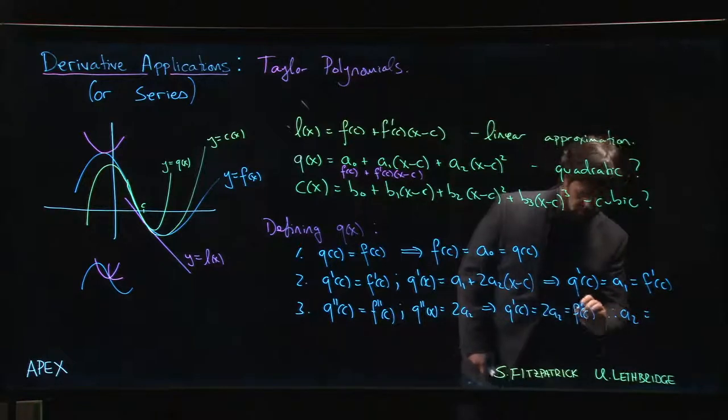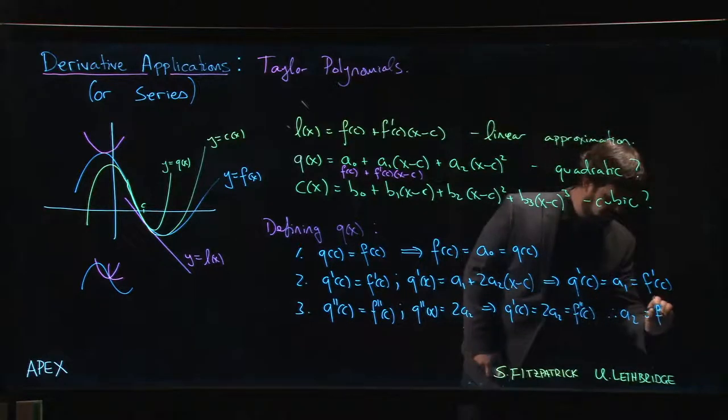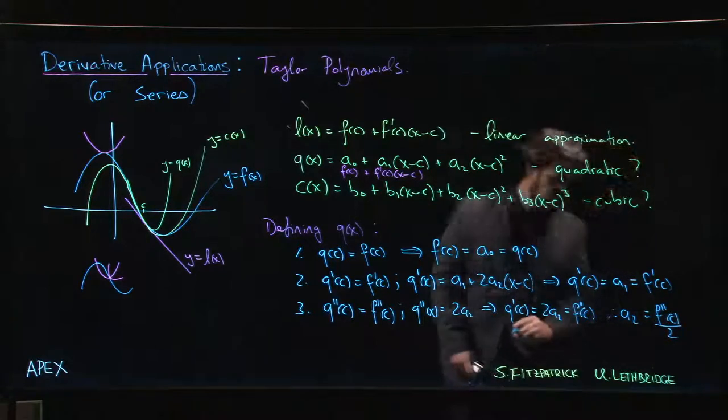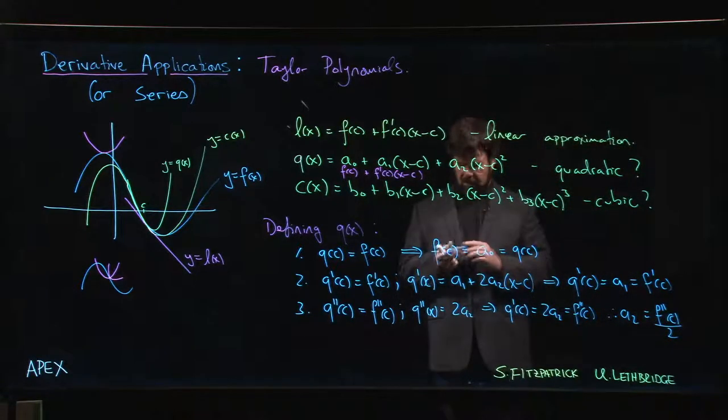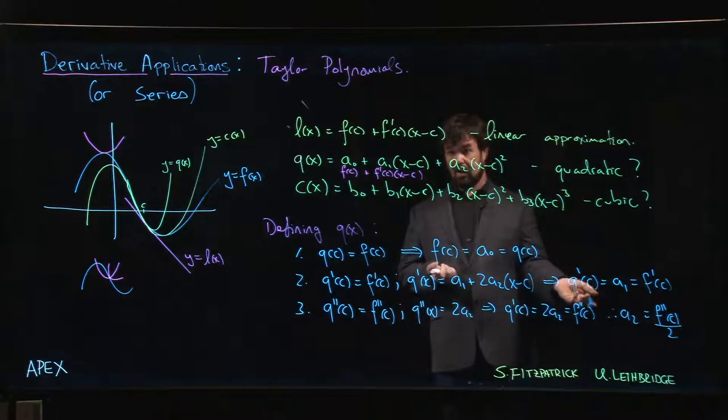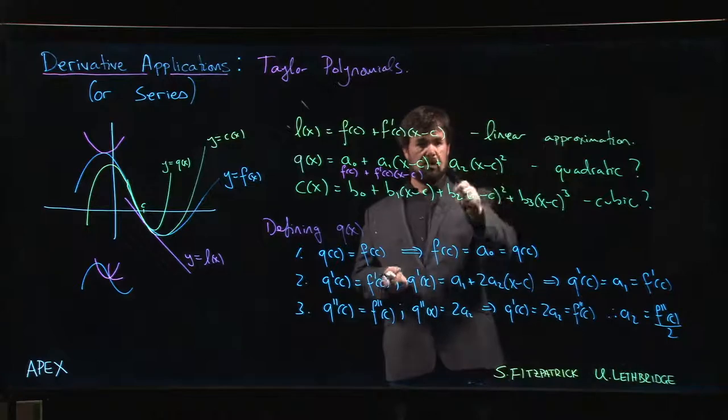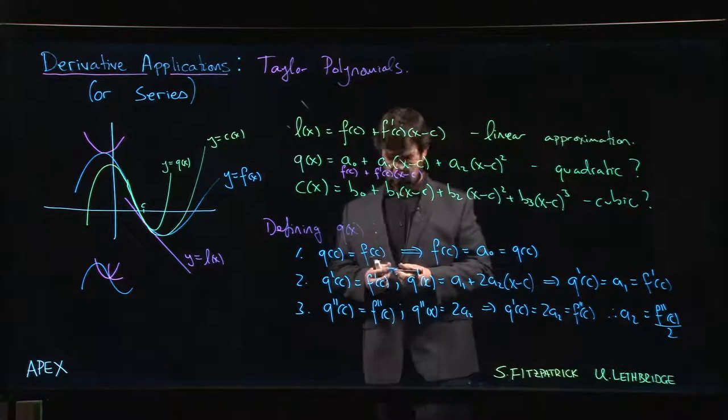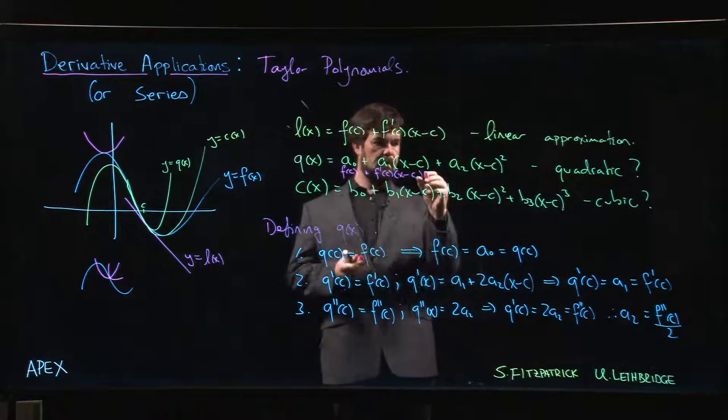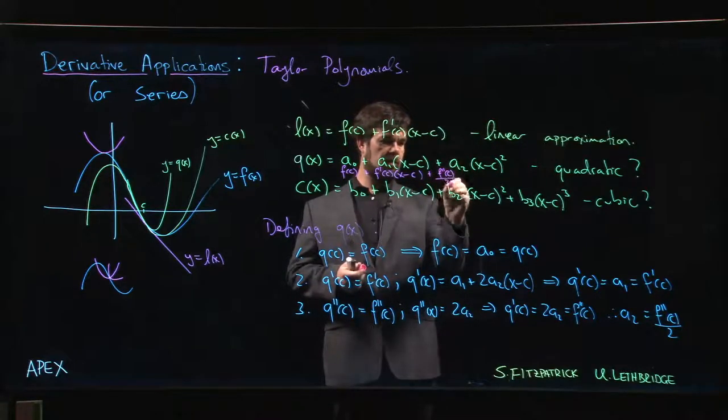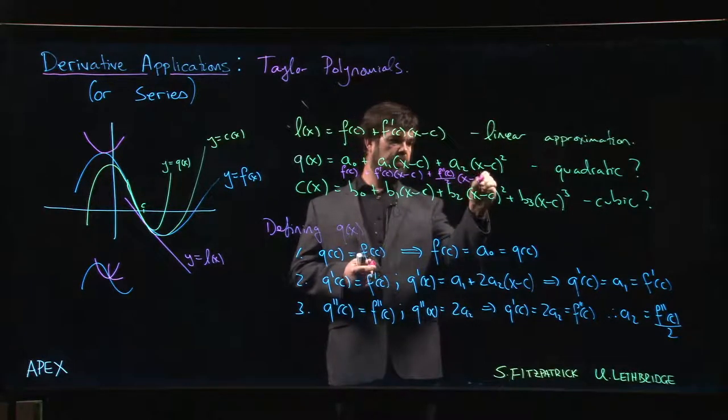We have to divide by 2. F double prime should be F double prime of c over 2. So it's not simply just putting the second derivative in there. We have to account for the fact that as we take derivatives of power functions, the powers come down. So we can put that in: F double prime of c over 2 times x minus c squared.